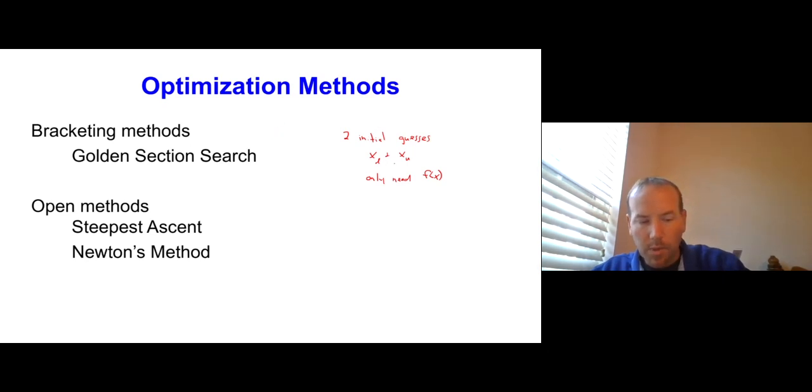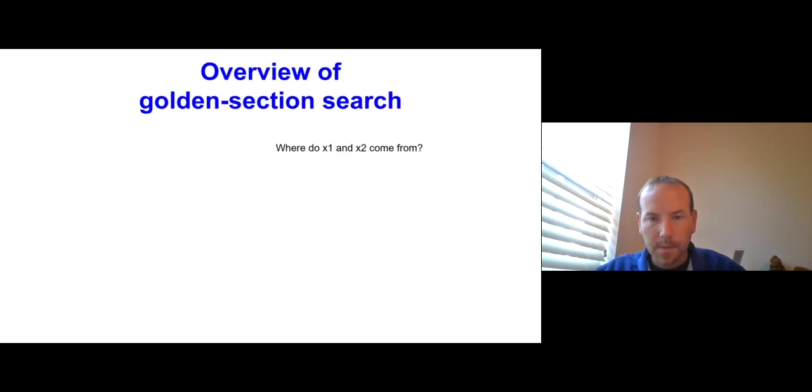In contrast, some of the open methods that we'll talk about only need one initial guess. The steepest ascent method is going to need to be able to take derivatives. And the Newton's method is going to need to be able to take second derivatives as well. These more advanced methods get greedier and greedier in terms of how much information they need about your function, even though they have the advantage that they may converge quite well.